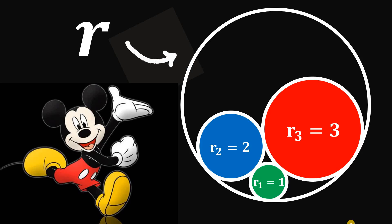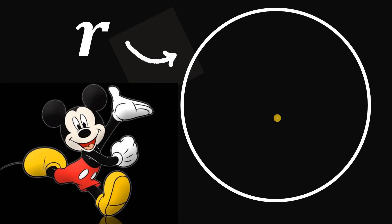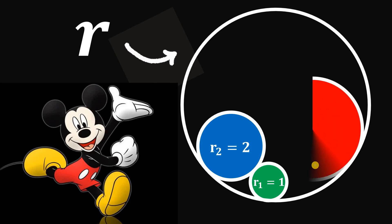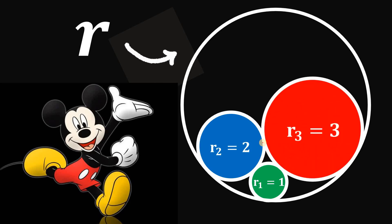Today, we will answer a geometry challenge related to Mickey Mouse. So here's the question: given this big circle, let's draw a circle with a radius of 1, another circle with a radius of 2, and another circle with a radius of 3. These circles are tangent to each other and internally tangent to the big circle. The question is: what is the radius of this big circle?